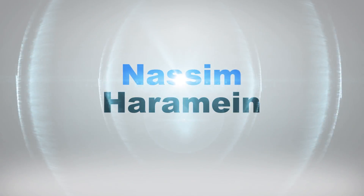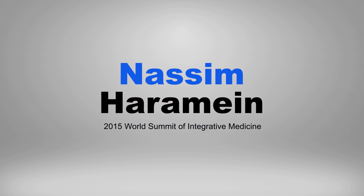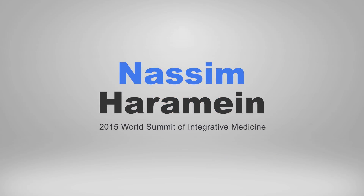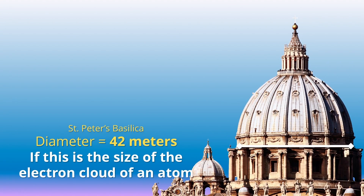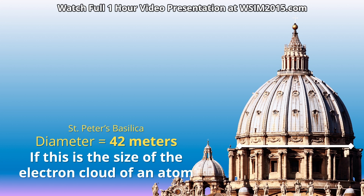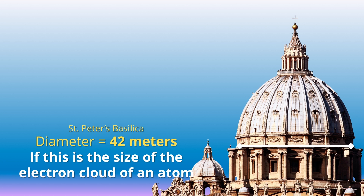Let me give you an example of how small the Planck is. So if we took the Dome of the Vatican that we have on this slide, the Dome of the Vatican is approximately 42 meters. So it's pretty big — in it you look like a little person, very small.